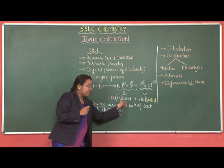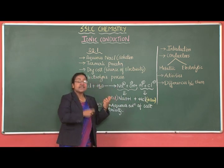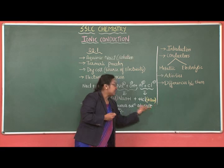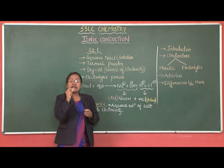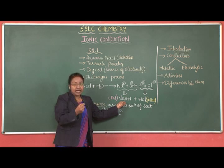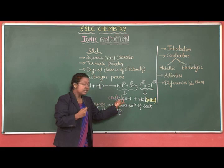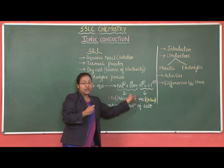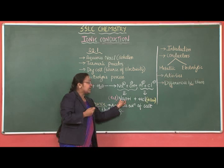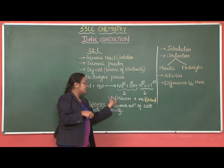Now guess which side has NaOH and which side has HCl. At the cathode — the negative terminal — NaOH is formed. At the anode — the positive terminal — HCl is formed. The turmeric powder below the negative terminal turns red in color. Why? The red color is due to the formation of NaOH, which is a base — sodium hydroxide. Due to the formation of NaOH at the negative electrode, the turmeric at that position becomes red in color.